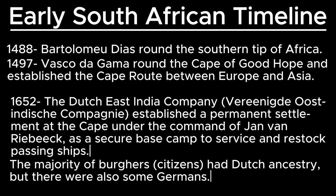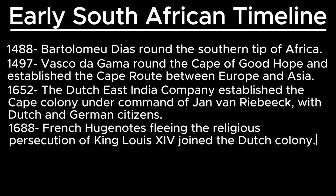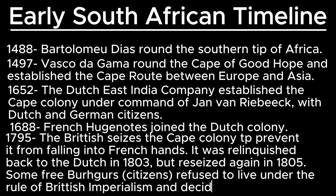A majority of them were Dutch and there were also some Germans. In 1688 they were joined by the French Huguenots fleeing persecution from King Louis XIV, and from these three nationalities is actually where the Boer Afrikaner people are descended. In 1795 the British seized command of the Cape Colony, but in 1803 power was given back to the Dutch, then the British seized it again in 1805. The Free Burgers refused to live under imperial rule and decided to move inland.